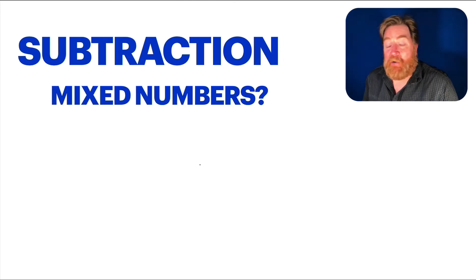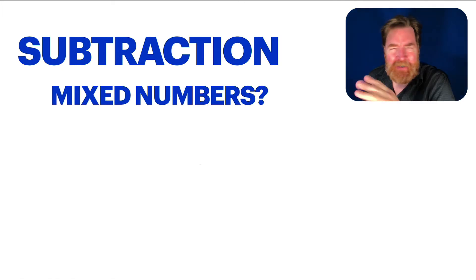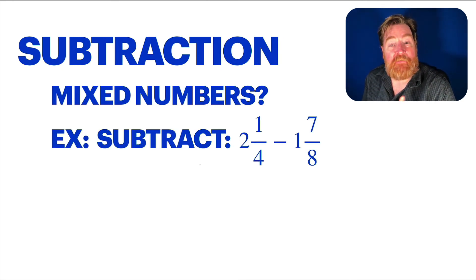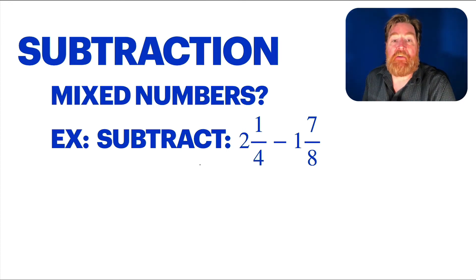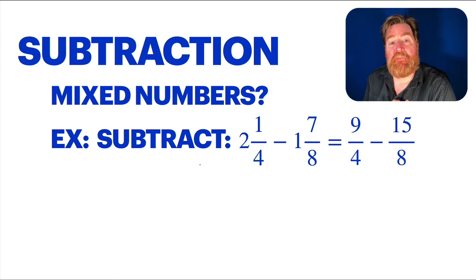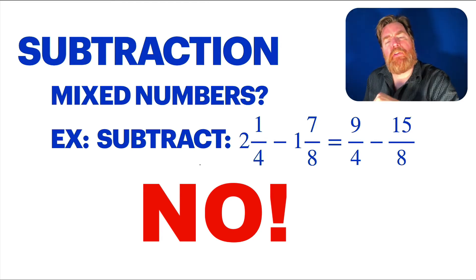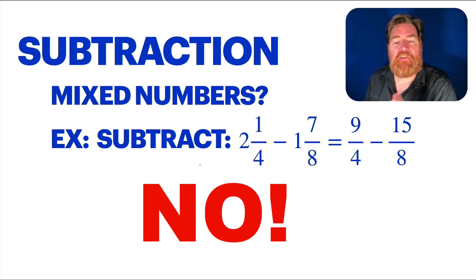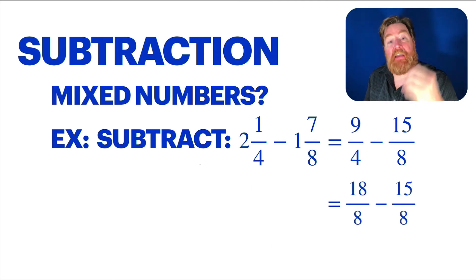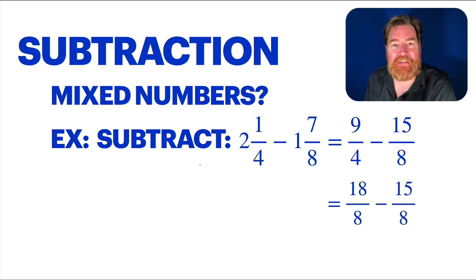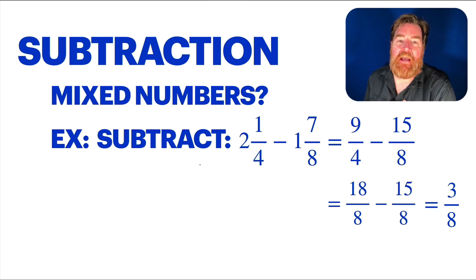Mixed numbers — we know what to do: convert them into fractions. What if you want to subtract two and one fourth minus one and seven eighths? First things first — no mixed numbers. Let's go right to fractions: nine fourths minus fifteen eighths. Can we subtract them? No — fourths and eighths are not the same thing. But let's convert: instead of doing thirty-seconds, I'm just going to turn them both into eighths. One of them already is eighths. So nine fourths becomes eighteen eighths minus fifteen eighths. Can we subtract eighths from eighths? You bet — same things. We're going to get a bunch of eighths. Eighteen minus fifteen — that's three eighths.